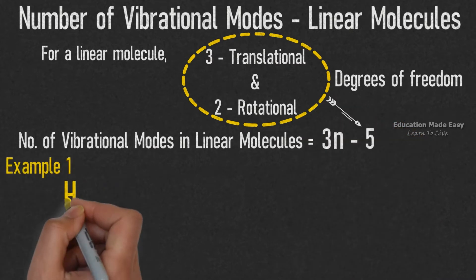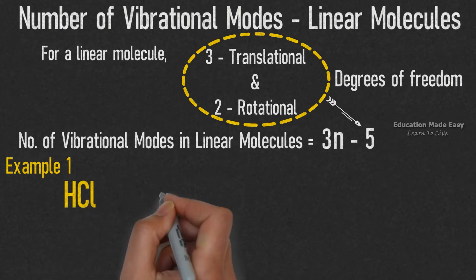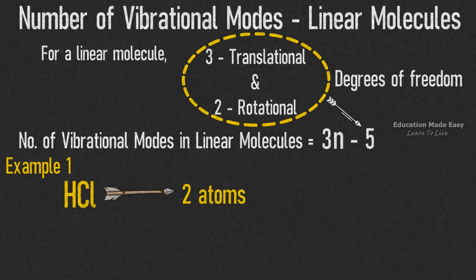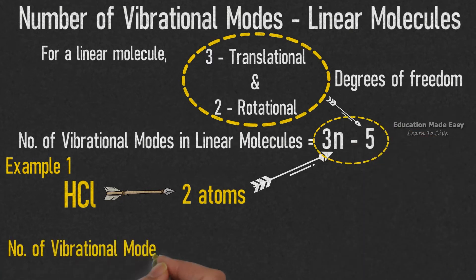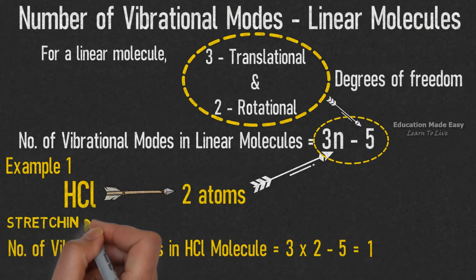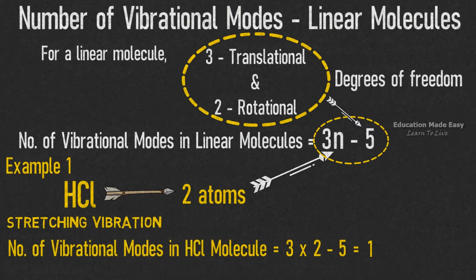Example 1: Consider the linear molecule HCl. In the HCl molecule, there are two atoms — hydrogen and chlorine — which means the value of n is equal to 2. Substituting this value in the equation 3n − 5, the number of vibrational modes in the HCl molecule becomes equal to 3 × 2 − 5, which is equal to 1. This means there will be only one vibrational mode in the HCl molecule, which is stretching vibration.